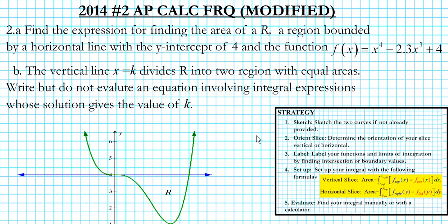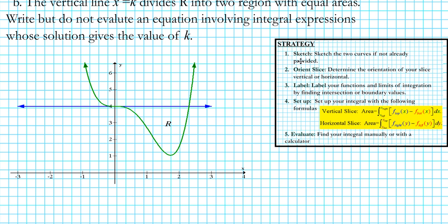Let's start with Part A. We want to find the area of the region. The five-step strategy is here for reference. Step one: we have to sketch the curve. In the AP exam the graph was provided, and this was a calculator-active section, so you could use your calculator to sketch the graph. Using the calculator, we can draw a graph like this.